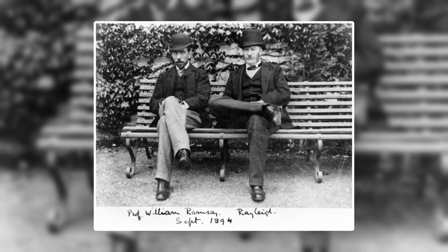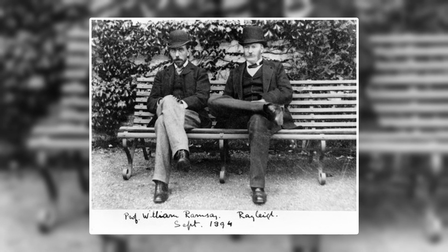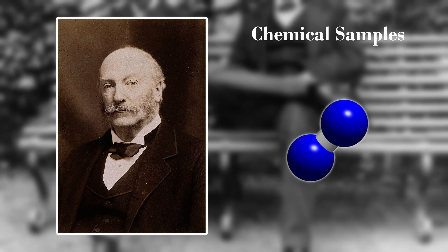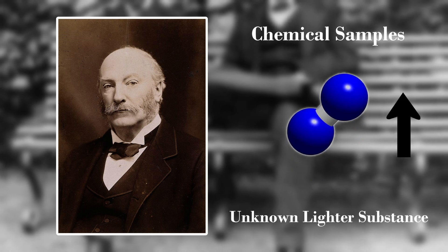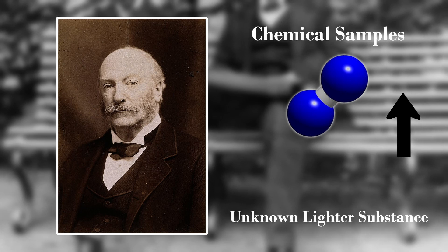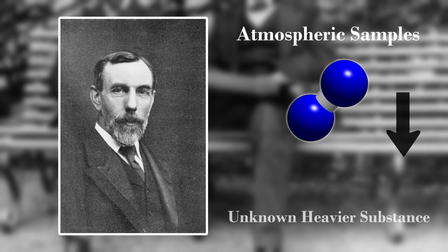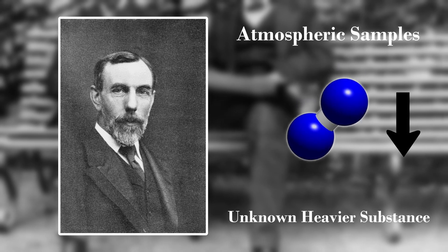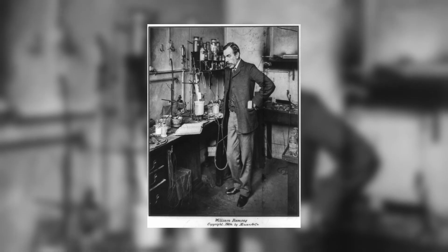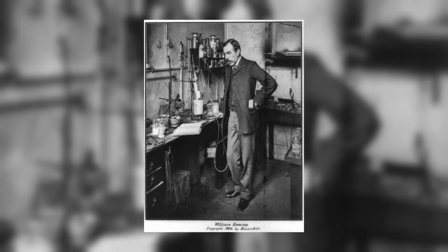When Ramsey came to assist Rayleigh, the two had differing opinions on what was causing the disharmony. Lord Rayleigh hypothesized that something in the chemical samples was making it less dense than the atmospherically extracted samples, whereas Ramsey hypothesized that some other substance was in the atmosphere that made the atmospheric samples more dense than the chemical ones. They did a range of experiments on both nitrogen types to get to the root of the problem.